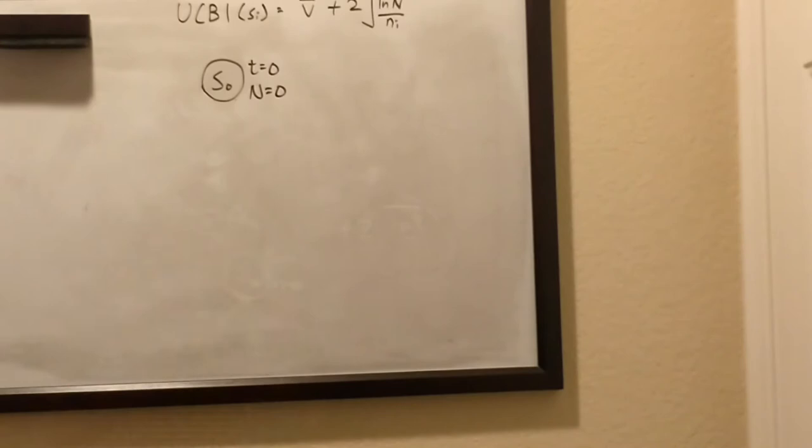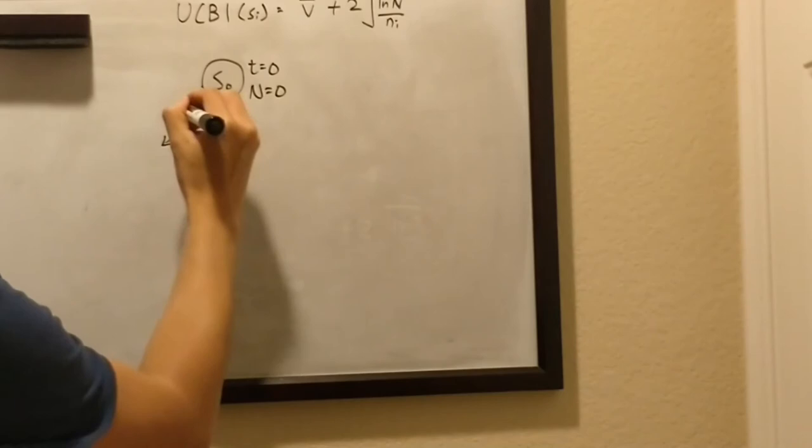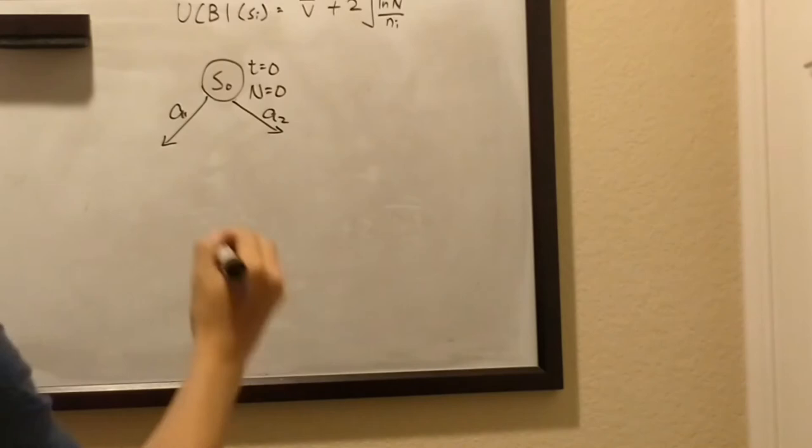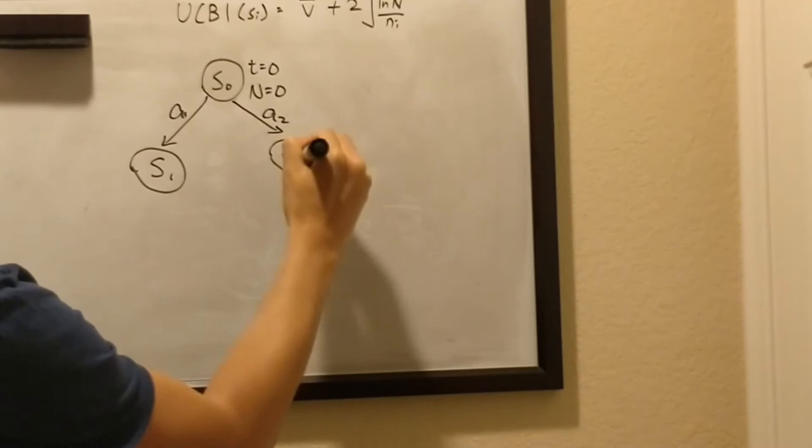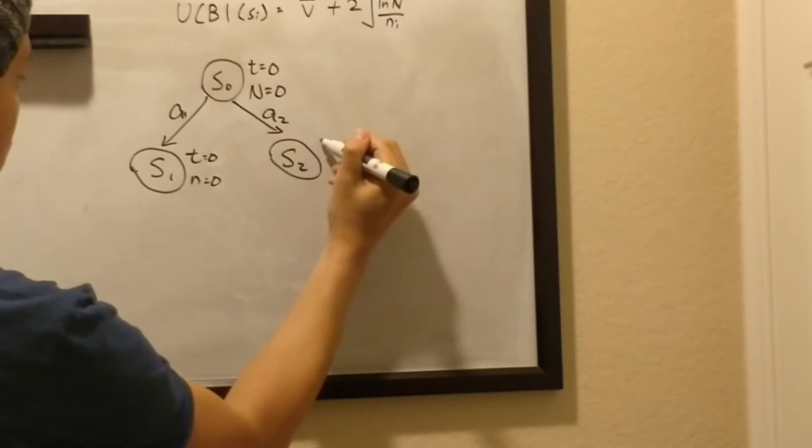Because it's the beginning, we're going to expand and have action 1, action 2, and those are the two only actions we can take, and we can get to state 1, state 2. And right now, t equals 0, n equals 0, t equals 0, n equals 0.